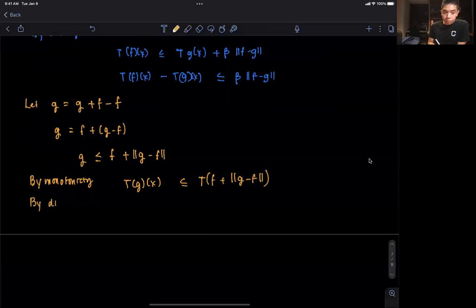Then by discounting, we know that T(g)(x) is less than or equal to T(f)(x) plus beta times ||g - f||.